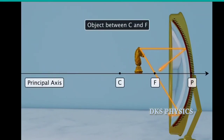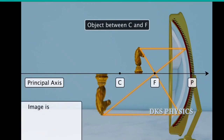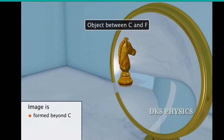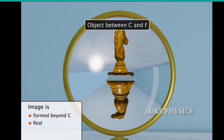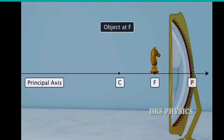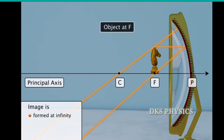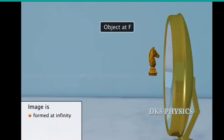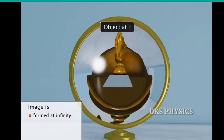When the object is between C and F, the image is formed beyond C and is real, inverted, and magnified — that is, larger than the object. When the object is at F, the reflected rays are parallel and meet at infinity, so the image is formed at infinity and is real, inverted, and highly magnified.